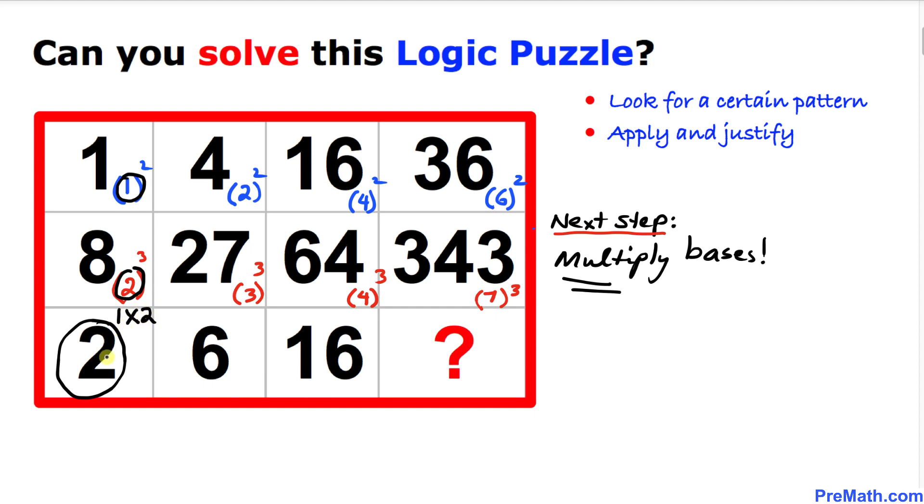In the next column we have base 2 and this is base 3, so 2 times 3 is going to give us 6.